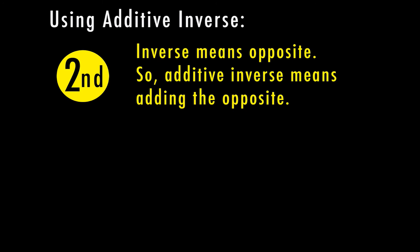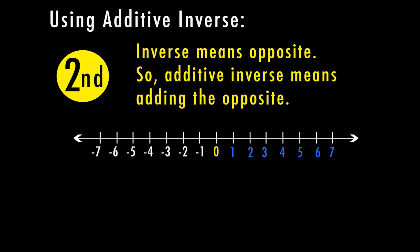Along with talking about opposites, we need to know how to use an additive inverse. An inverse means opposite, so additive inverse means adding the opposite. Let's look at our number line one more time. I'm going to have a point at four. The opposite of four is going to be negative four — those are opposites because zero is directly in the middle. Now let's talk about the additive inverse. Here I have four minus five. What the additive inverse is saying is that I can add the opposite and I'm still going to get the same answer.